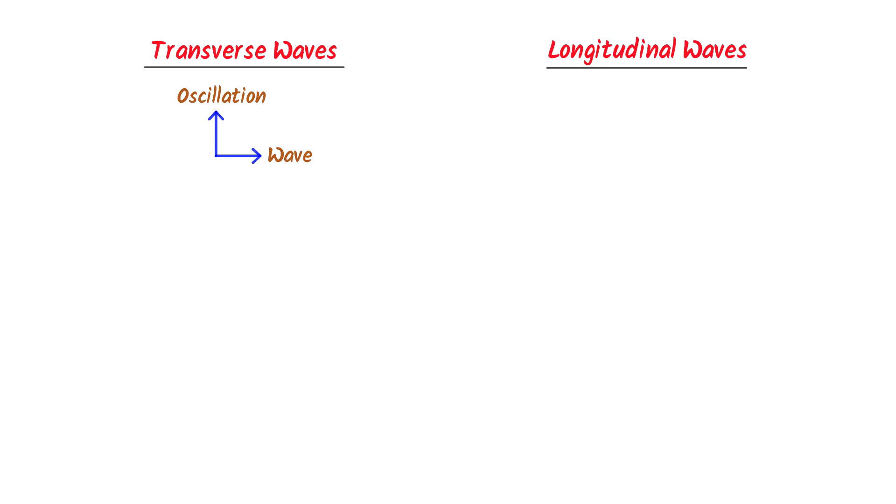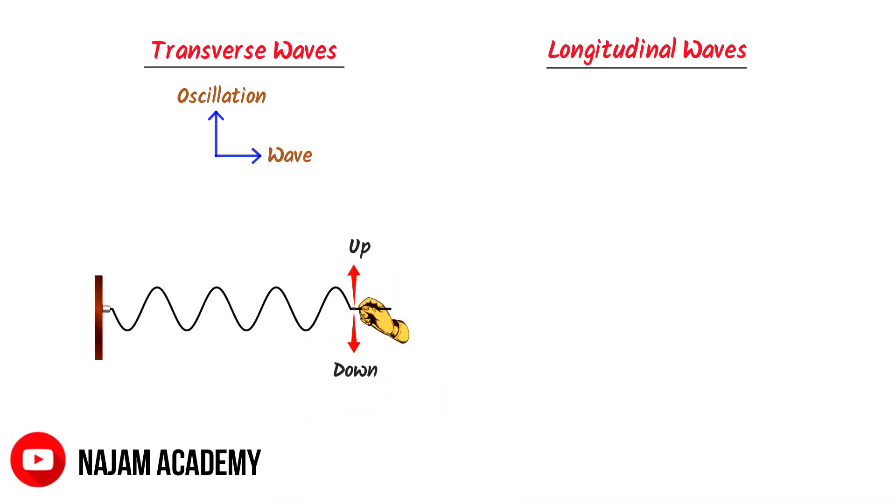For example, consider this rope. When you move your hand up and down in a vertical direction, the wave in the rope moves in the horizontal direction. This wave in the rope is called a transverse wave.